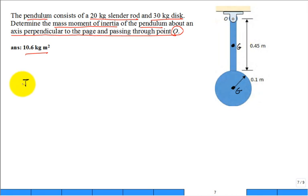And so I would calculate I sub bar for first the rod and then for the disc. So my two parts. So what is the formula for I bar for the rod?